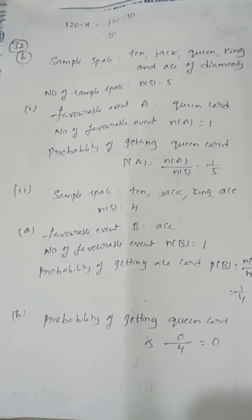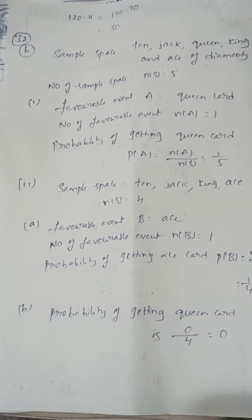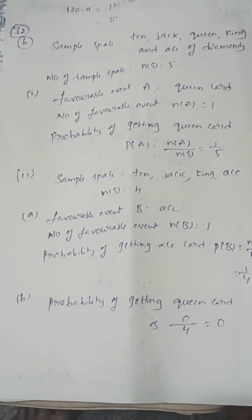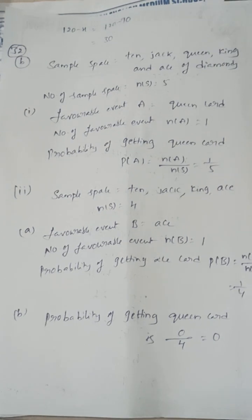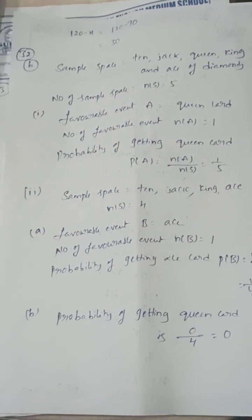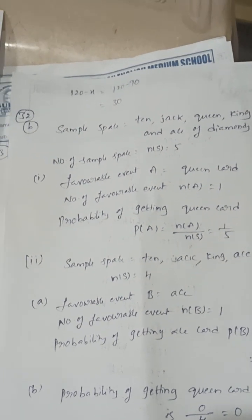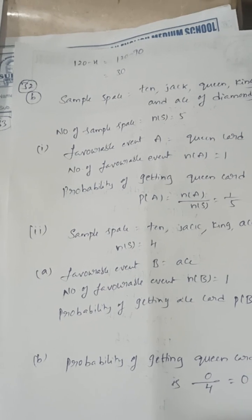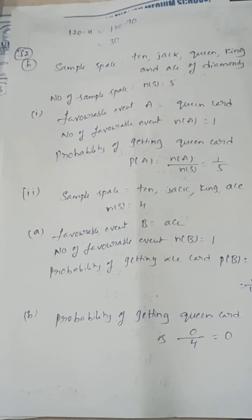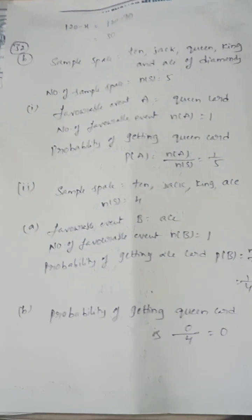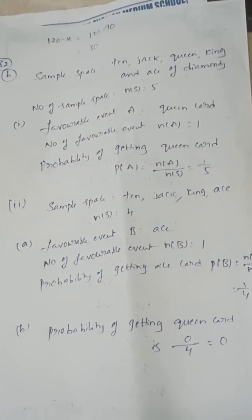There are 5 cards: 10, Jack, Pin, King, and Ace of Diamonds. Sample space = 5. First: probability of drawing a Queen card = 0 (impossible event, probability = 0). Second: draw one card — Queen = 1/5. Remove the Queen; 4 cards remain: 10, Jack, King, Ace. Probability of drawing Ace = 1/4. Probability of drawing Queen from remaining = 0 (impossible).